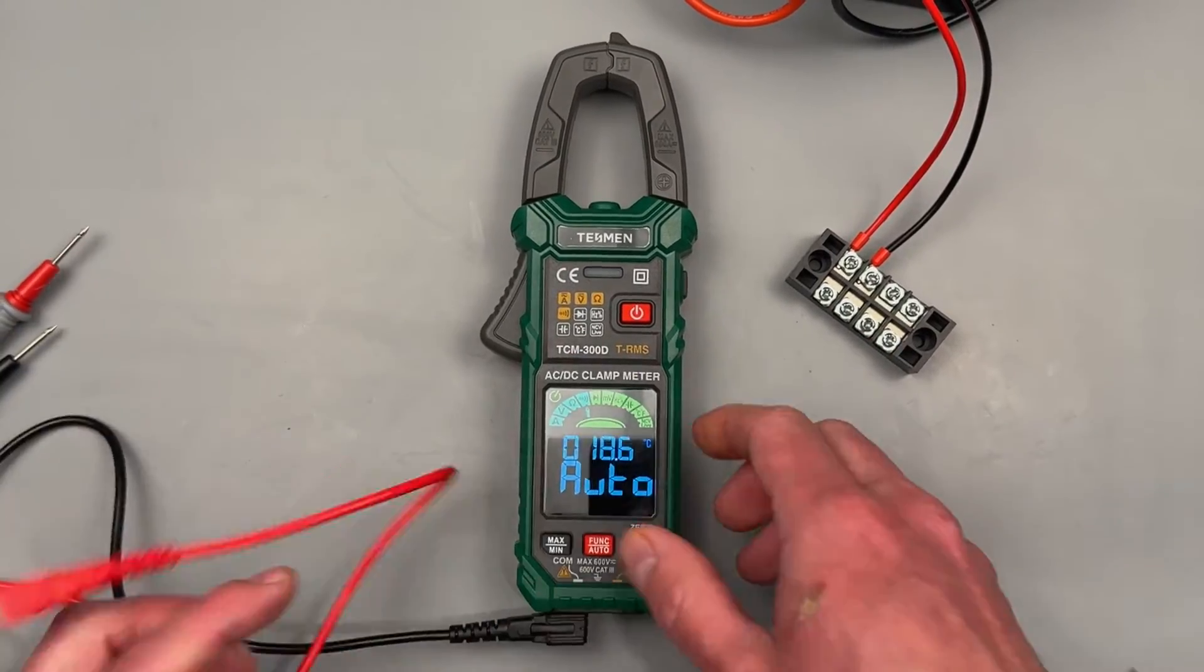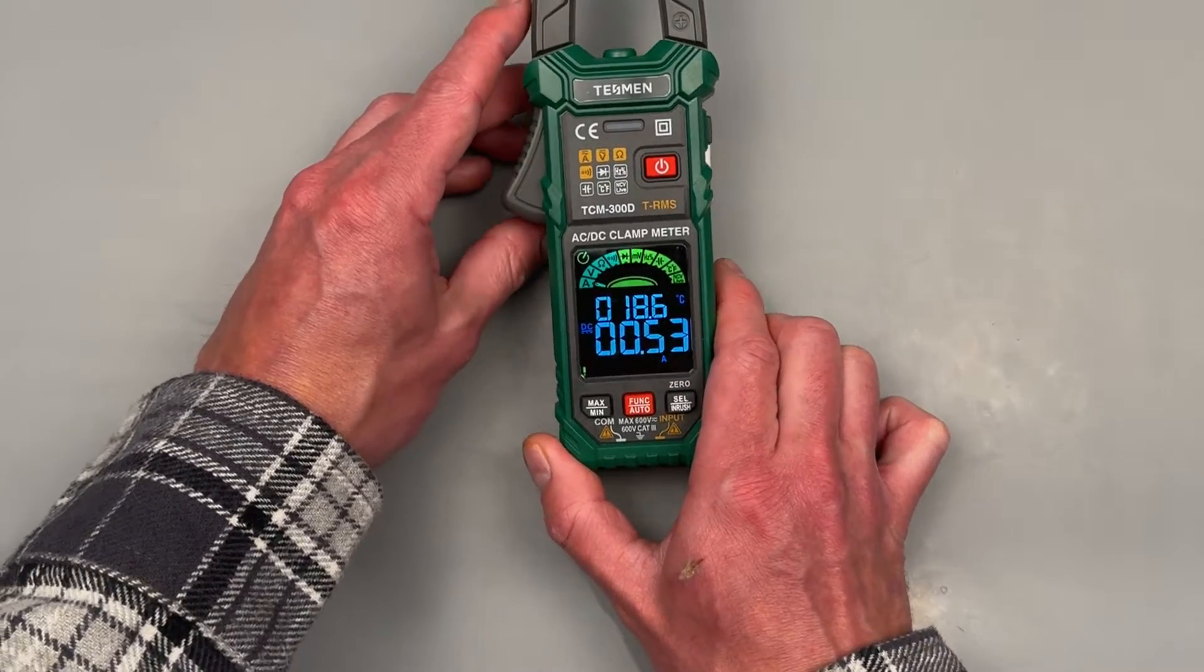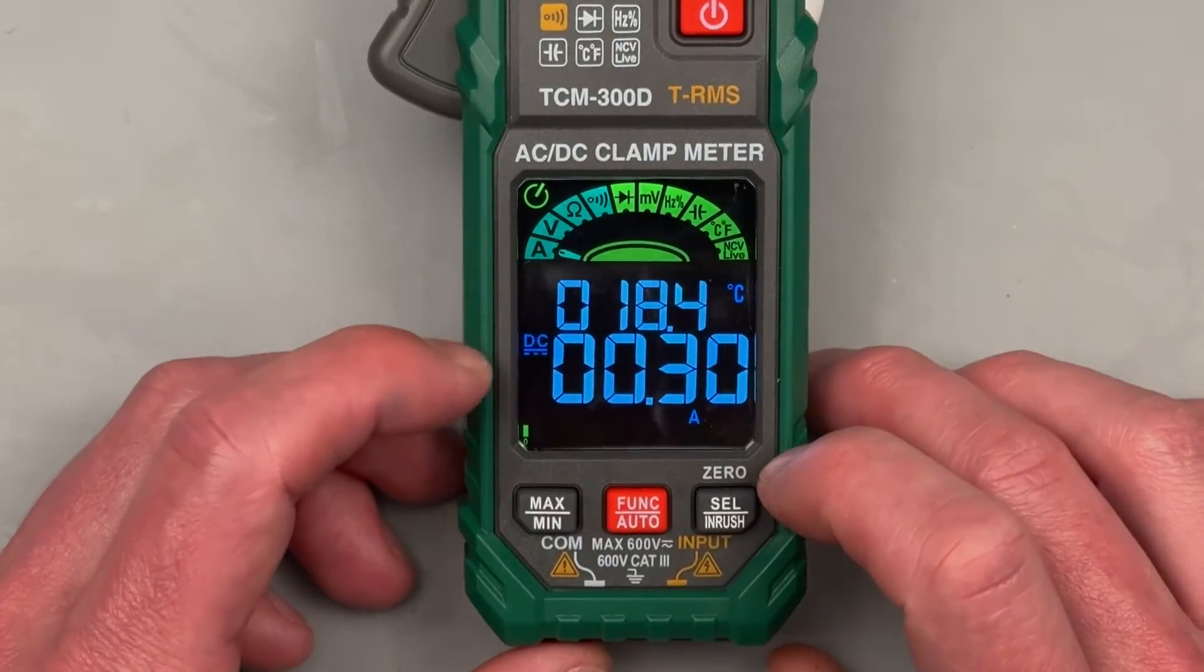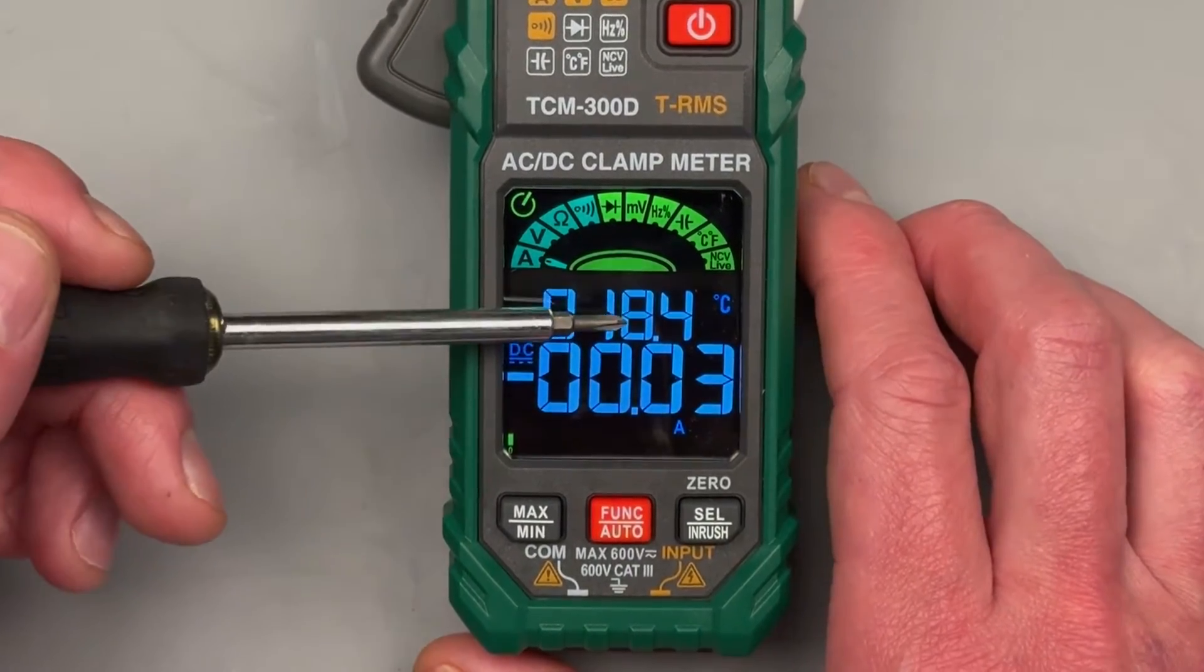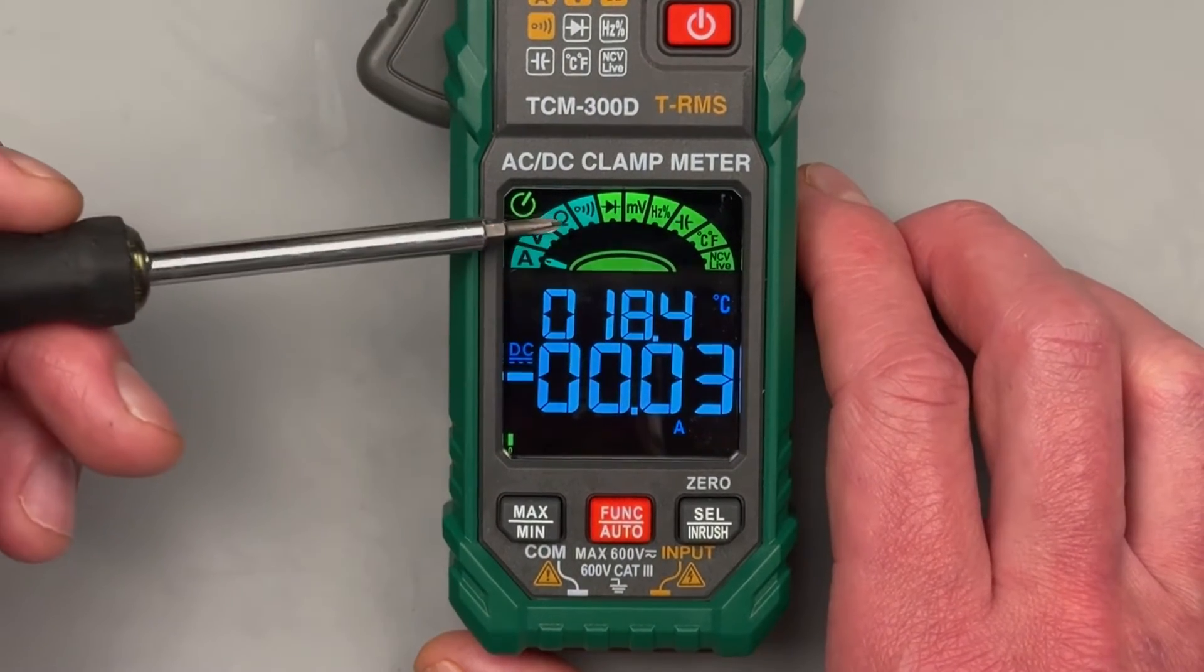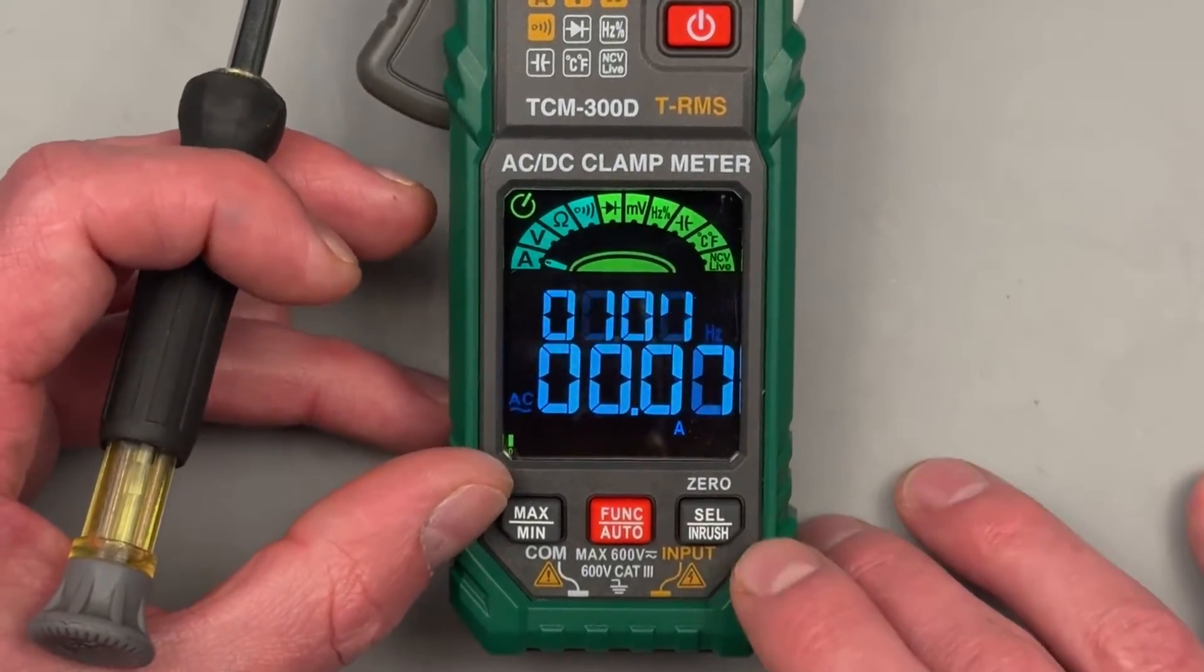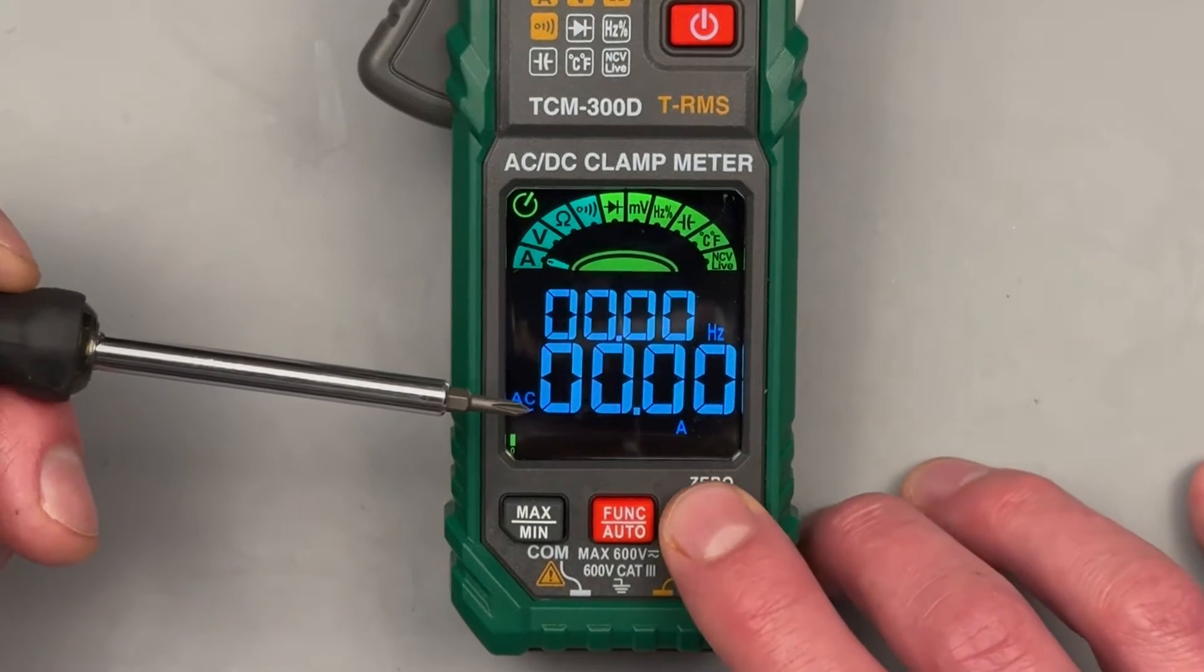But let's go ahead and start at the beginning. The main function or main marketing point of this meter is going to be its inrush amp clamp capability. It's going to default to DC amperage. This secondary display up here is going to display ambient room temperature in Celsius, and then sometimes it'll be in hertz. It'll change depending on the setting that you're in. We're on DC amp clamp. Hit selection, now we're in AC. Notice how this top portion has changed to hertz.